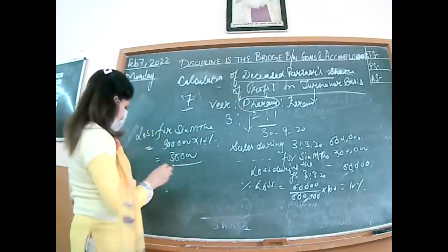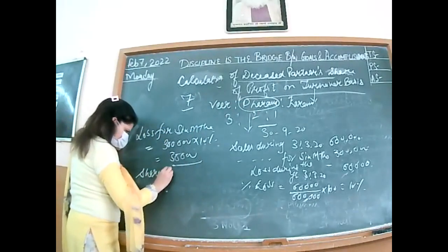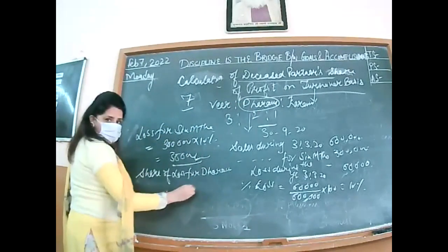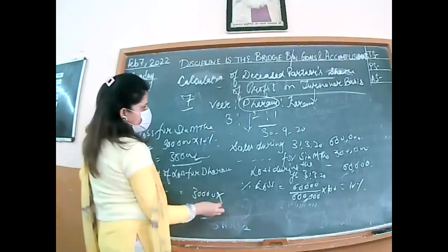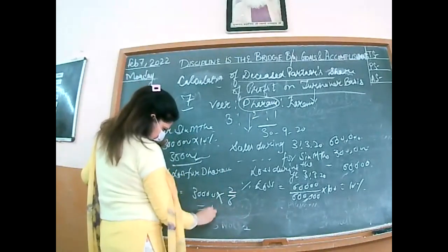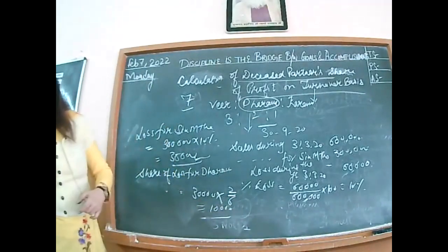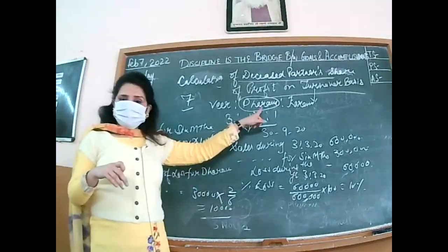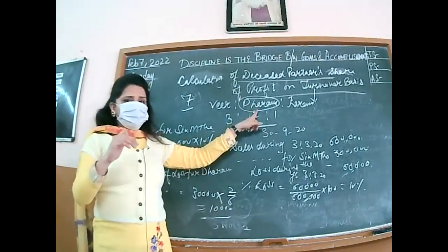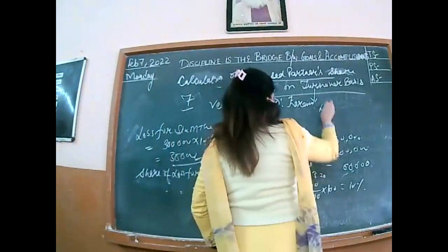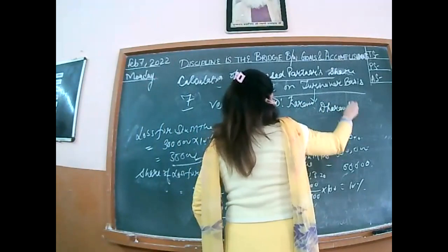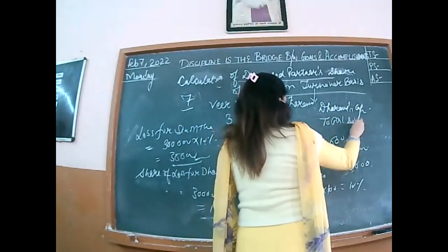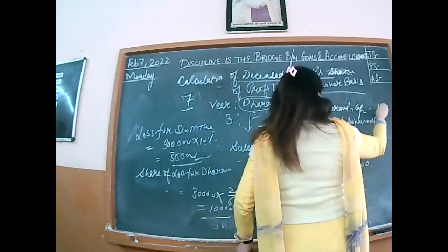Who is dying? Dharam is dying, and Dharam's share is 2/6. Share of loss for Dharam: the whole firm's 6-month loss is 30,000, so Dharam's share = 30,000 × 2/6 = 10,000. Dharam is suffering a loss of 10,000. For the journal entry in case of loss, capital is debited: Dharam's Capital Account debit to P&L Suspense Account = 10,000.